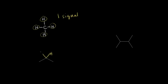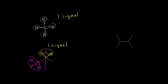If we move on to propane, this carbon right here has two protons on it, and these two protons are in the same environment — they are chemically equivalent — so we'd expect to see only one signal for them. The methyl protons are in their own environment, but if we draw a line of symmetry, we can see that these three protons are in the same environment as the other three. So we have six protons that are chemically equivalent, giving one signal. For propane, we would expect a total of two signals.